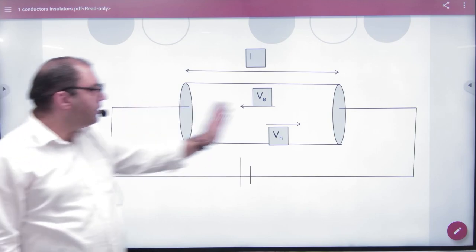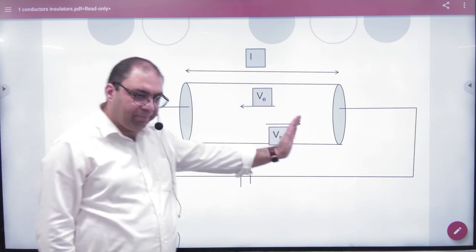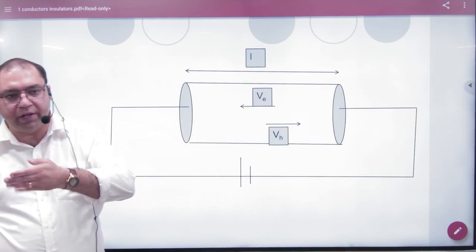The length of semiconductor is L. You have applied the electric field E. In this case, electron will move and holes move.